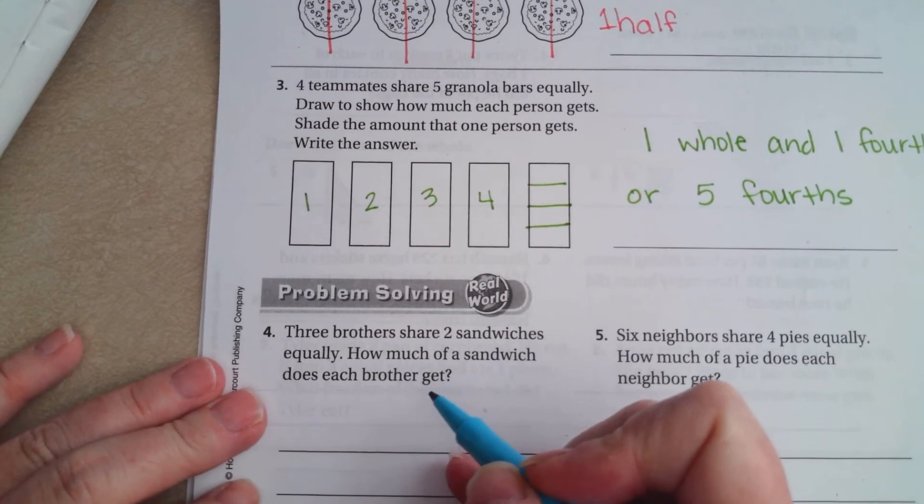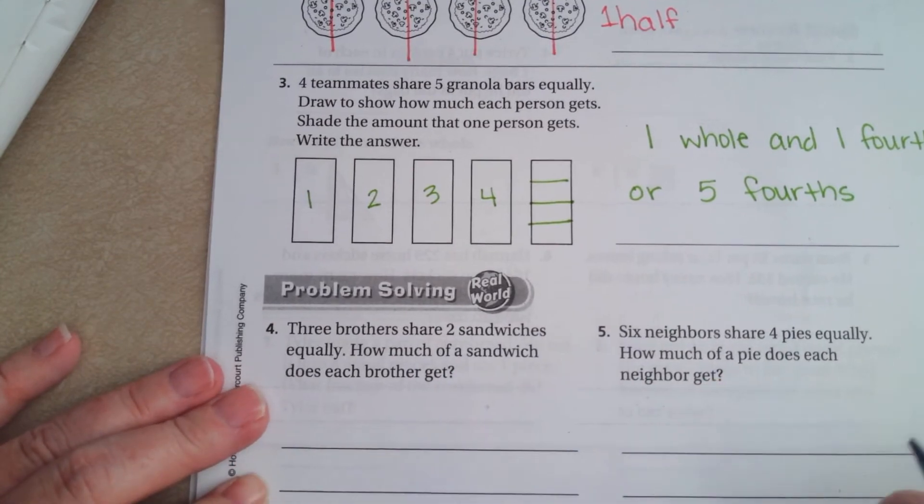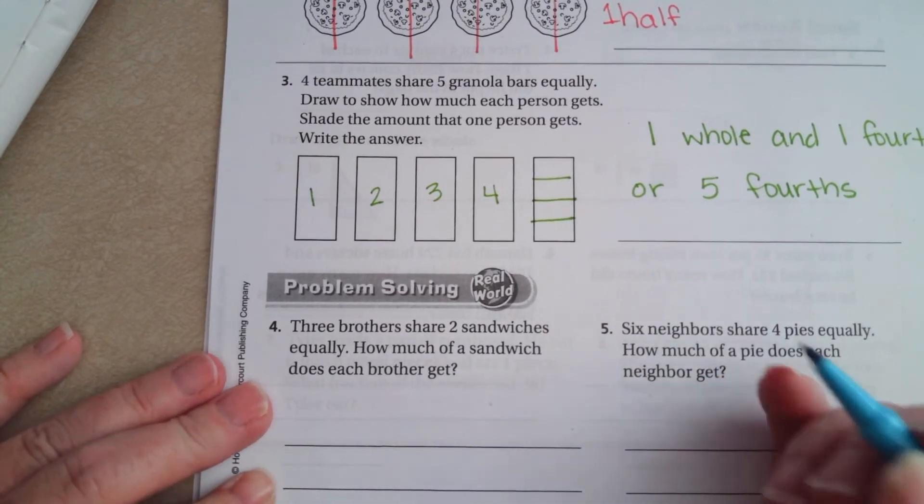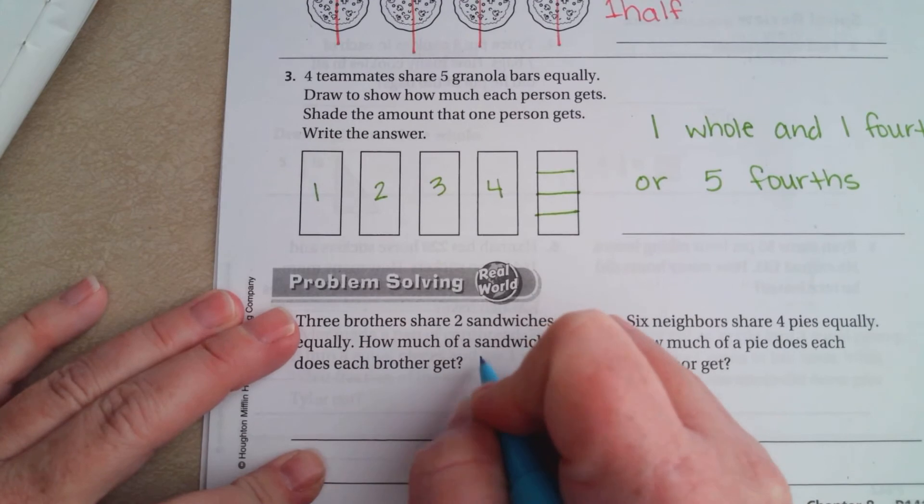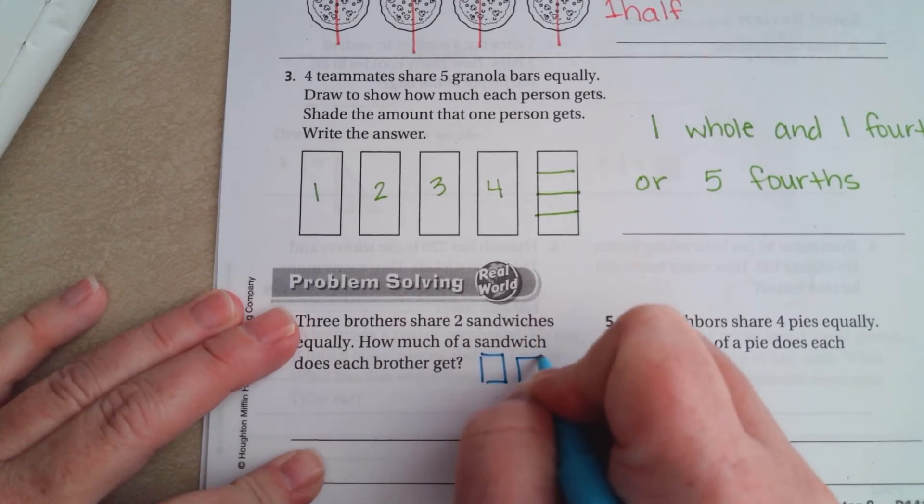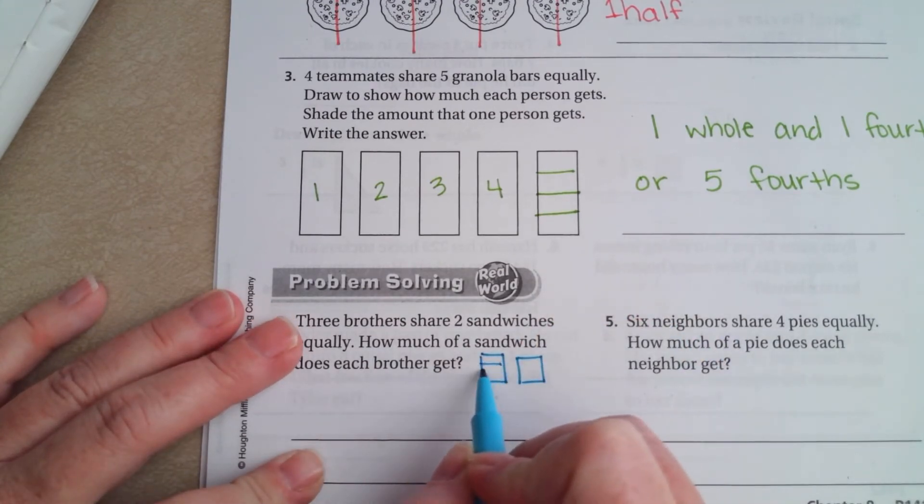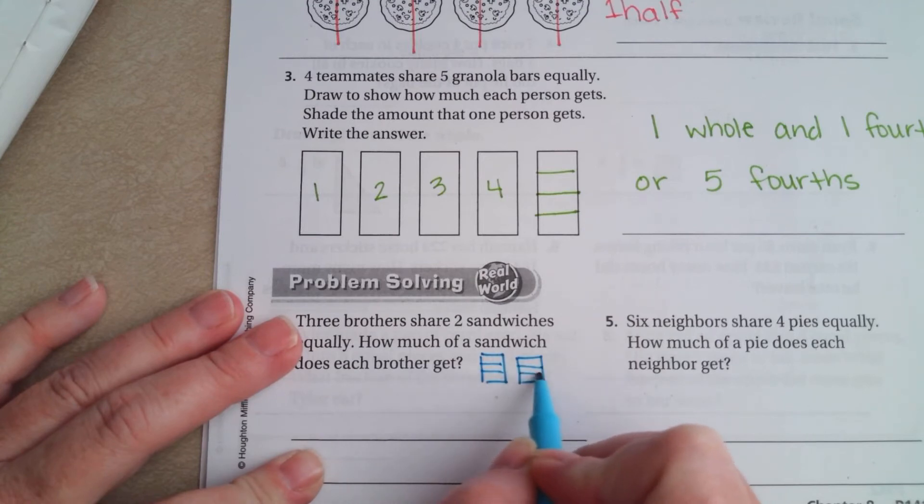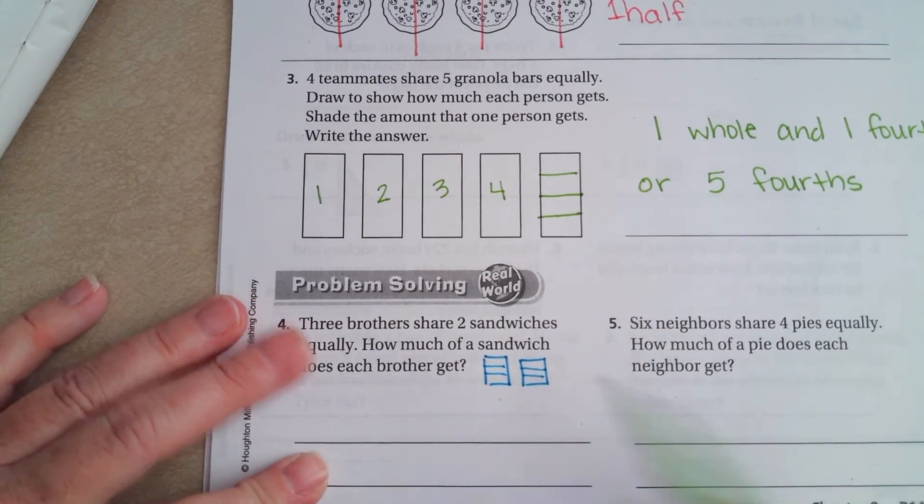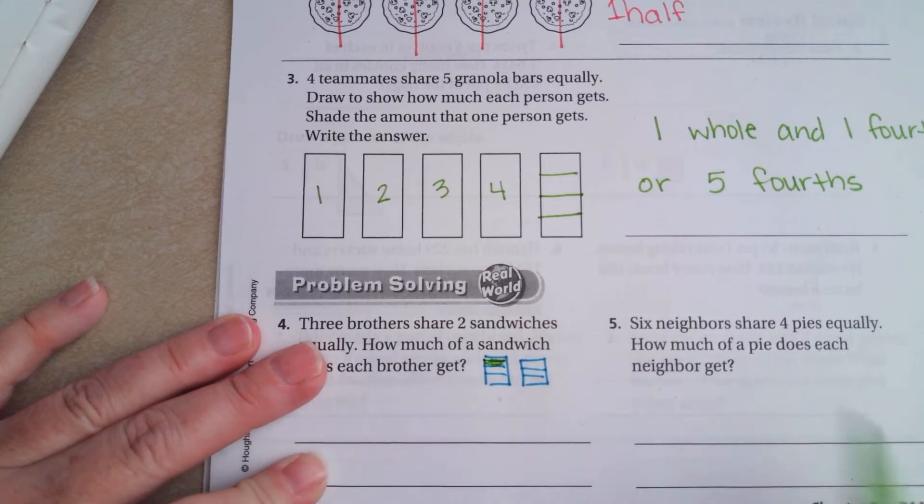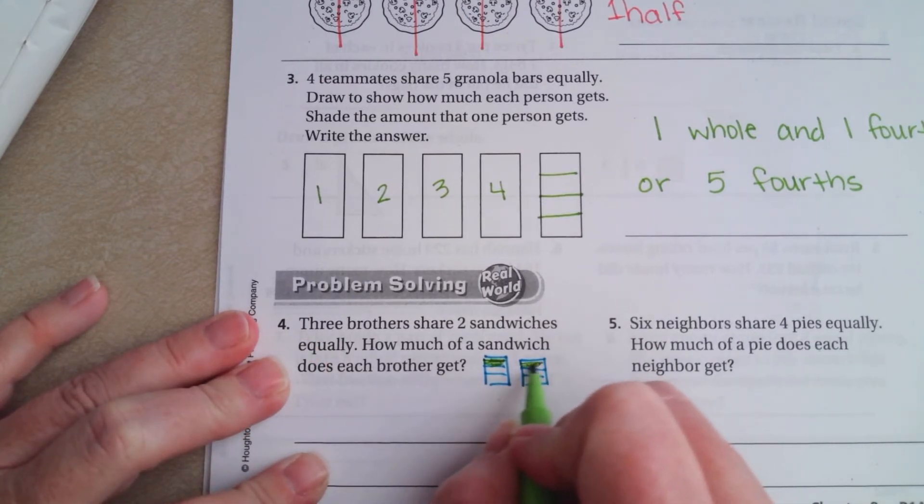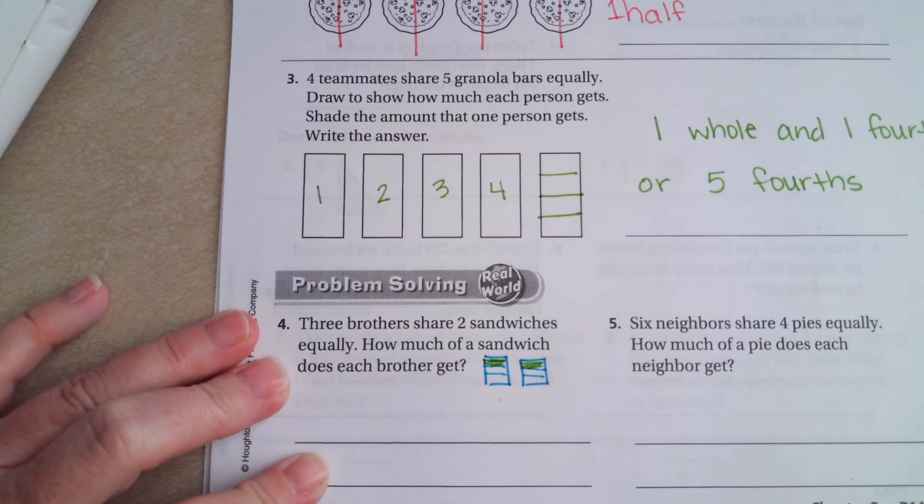Alright, 3 brothers share 2 sandwiches equally. How much does each brother get? So, 2 sandwiches. We're going to split both of those into 3. So, I'm going to go 1, 2, 3. 1, 2, 3.